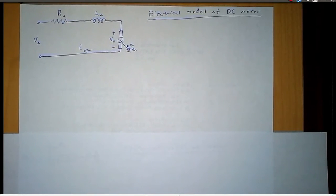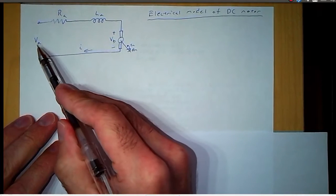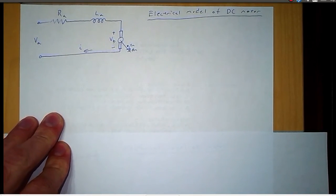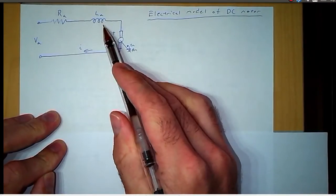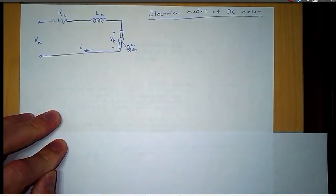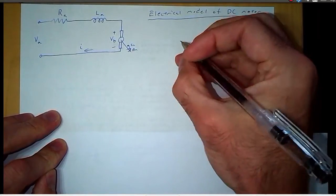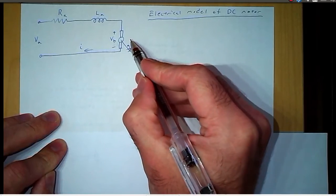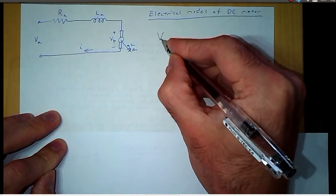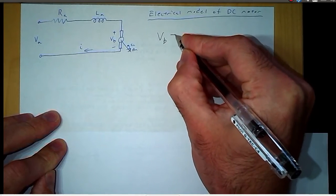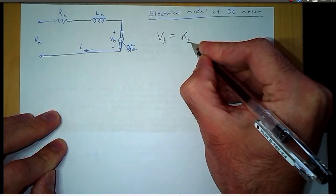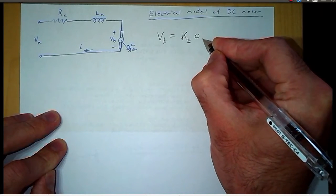Here we have an electrical model of a DC motor. This is the voltage applied to the armature, and the armature has some resistance and inductance. And then here we have the back EMF — remember the back EMF is a voltage source that depends on the speed of the motor. The notation we use is VB is equal to the voltage constant KE times the angular velocity of the motor.